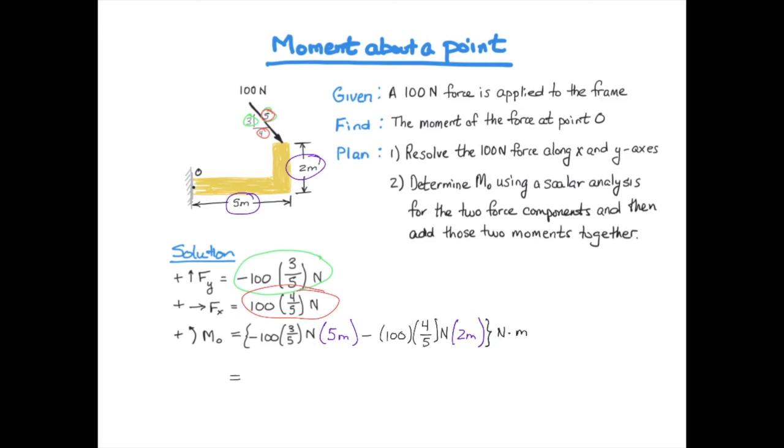And when we add these two forces together, we get a force of minus 460 newton meters in the clockwise direction, thus the negative sign. Or we could write this as a positive number with the definition of the force being in the clockwise direction.